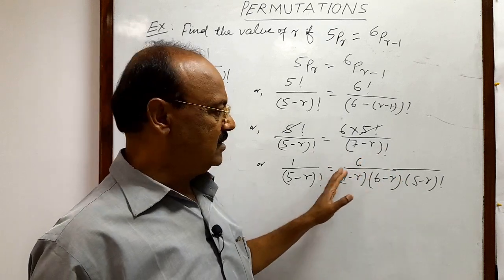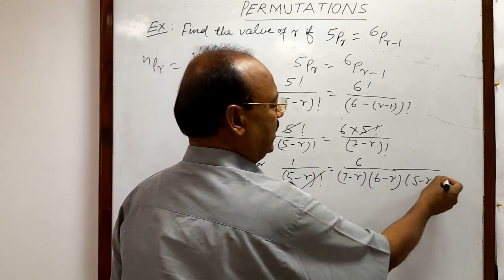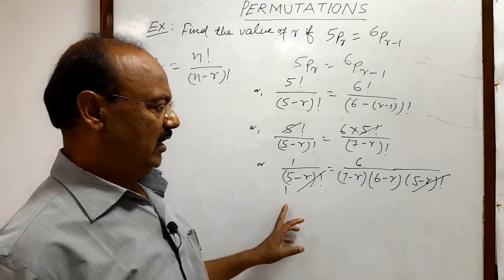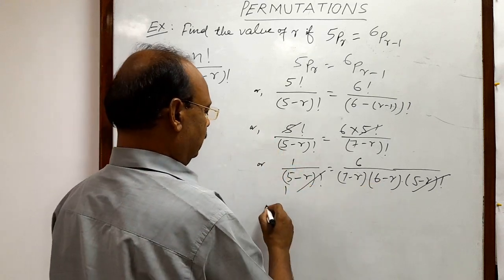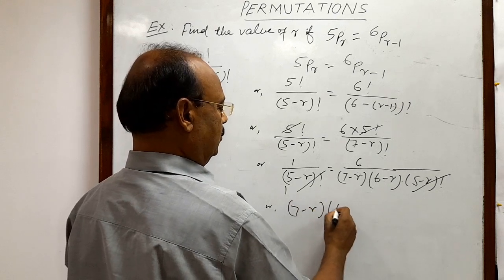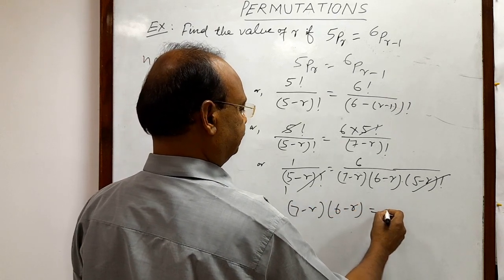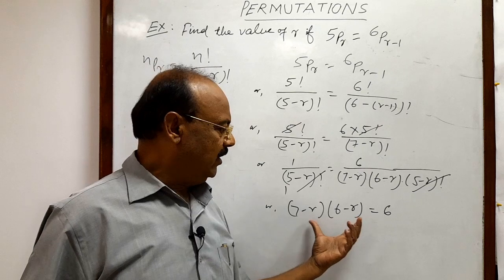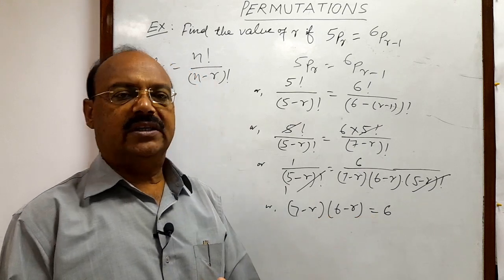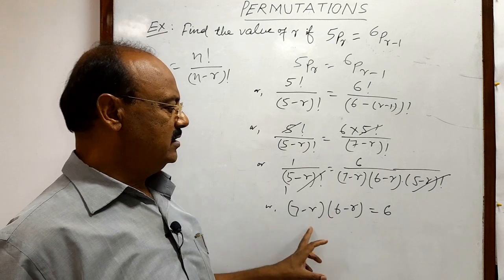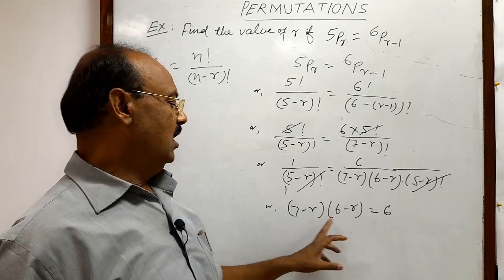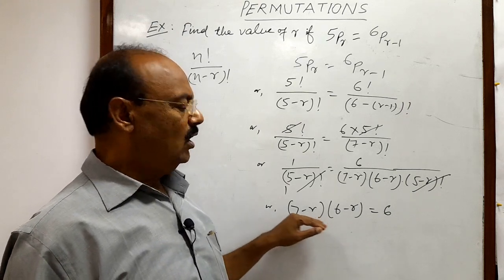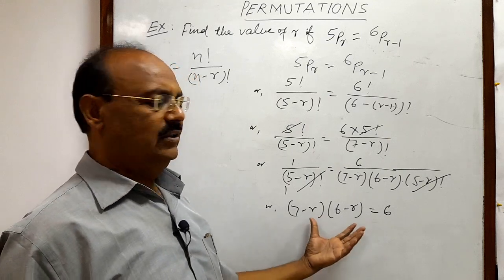So what is the benefit of expansion like this? (5 minus r) factorial will be cancelled out from both sides. So in the denominator we are getting 1. Now by cross multiplication, we will get (7 minus r) into (6 minus r) is equal to 6. Now we can find out the value of r from here. We are having two methods here. First method: we will multiply these two factors, 7 minus r and 6 minus r, which will be r² minus 13r plus 42, and we will solve this quadratic equation and we will get the value of r.